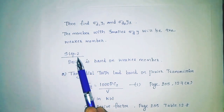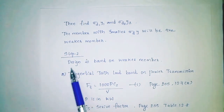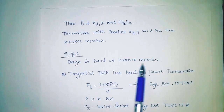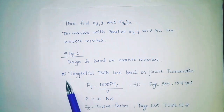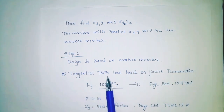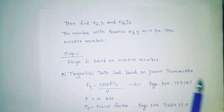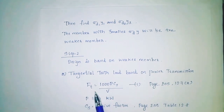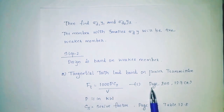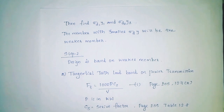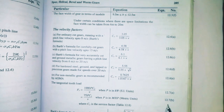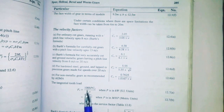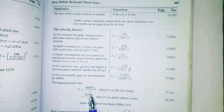Step 2: The design is based on the weaker member, using ZD2. Find the tangential tooth load based on power transmission. The equation is: Ft = 1000 × P × CS divided by V. Reference: page number 205, equation 12.7a.